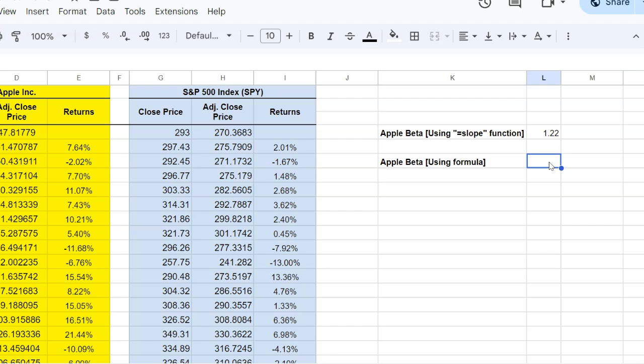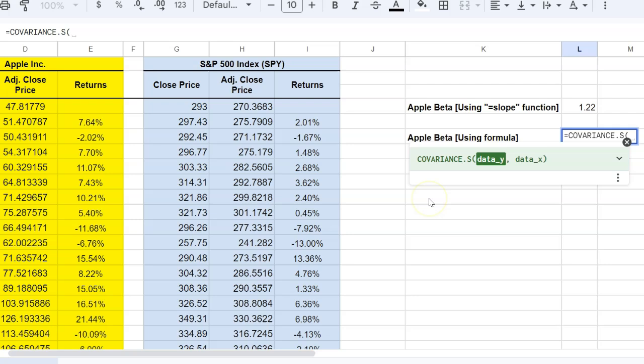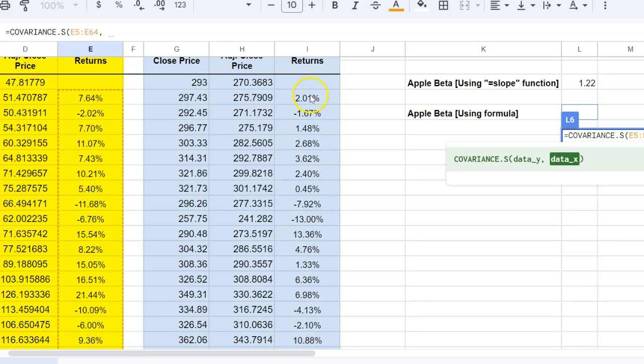The other way in which you can do this is using the covariance formula. Now when you try to use the covariance formula it will ask you whether you're looking at the covariance of the entire population or whether you're looking at the covariance of a sample. In our case we're looking at a sample because this is a specific sample of returns data over the past five years. So we'll do covariance S and then again the data on the y-axis is our Apple returns in relation to the data on the x-axis which is our independent variable.